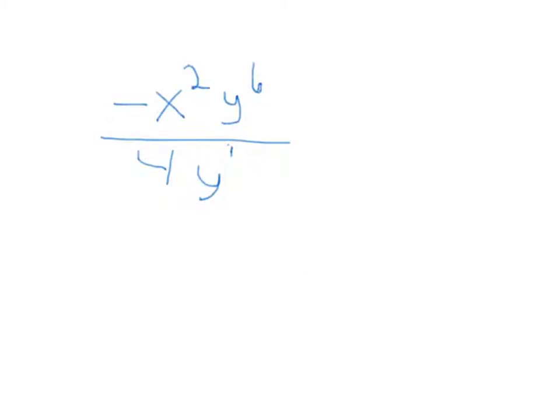We can now use the quotient rule again for the y's and say y to the sixth minus one power equals y to the fifth power.